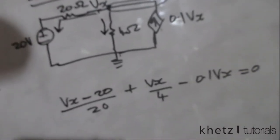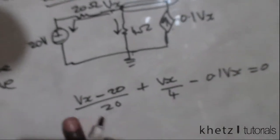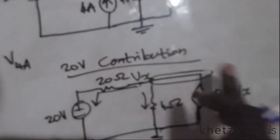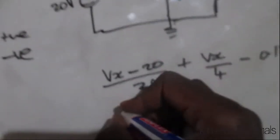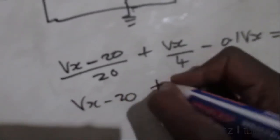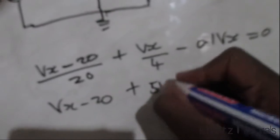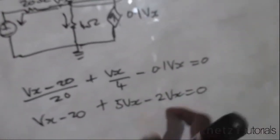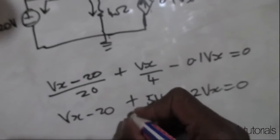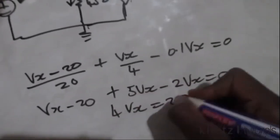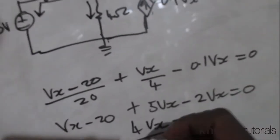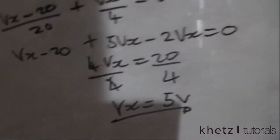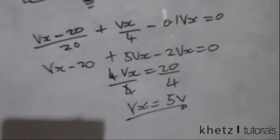This is now a math problem. This Vx is the contribution of the 20-volt source by itself. Multiplying through by 20: (Vx − 20) + 5Vx − 2Vx = 0, which gives 4Vx = 20. Dividing both sides by 4, we get Vx = 5 volts. That is the contribution of the 20-volt voltage source.